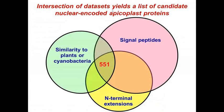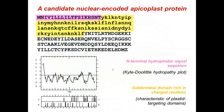Now, we can imagine many proteins that might yield false positive results. There might be other reasons why proteins show similarity to plants or cyanobacteria, and you should think about what those reasons might be. There will certainly be many other proteins that have secretory signal sequences or the long N-terminal extensions that are hallmarks of plastid targeting domains, but we are looking for the intersection of those — applying these criteria sequentially in a decision tree kind of analysis to identify candidate nuclear-encoded plastid genes.